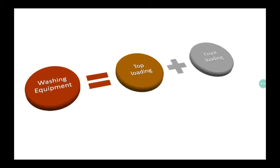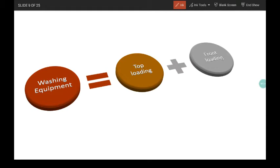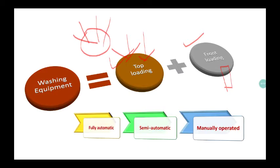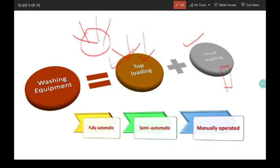When we are talking about washing equipment, washing equipment has basically two types of models available. That is top loading and another is front loading. Top loading means garments are put in the machine from the top. In front loading machine, garments are put in the machine from the front level. These machines may be further characterized as fully automatic, semi-automatic and manually operated.